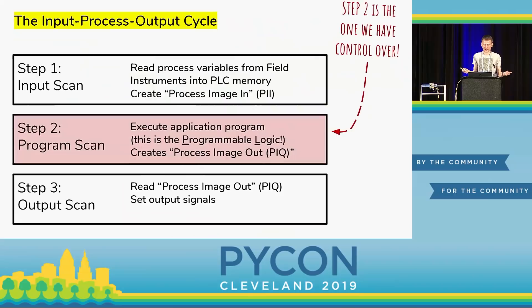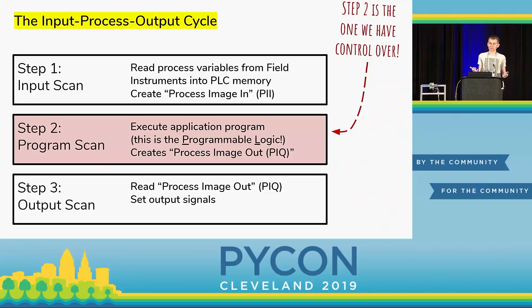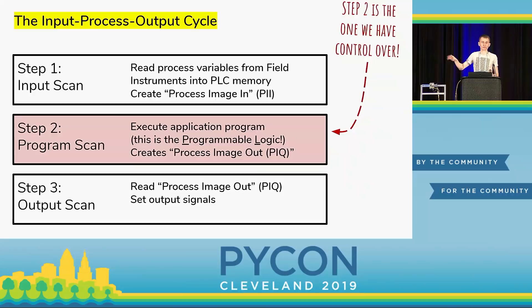A PLC goes through the IPO cycle like any compute device. In the first step, input, we read the process variables from the field — the PLC looks at electrical signals and stores them in memory in a place called the process image in. In step two, we run some logic and computation, turning input variables into output variables, written to the process image out. The PLC then turns those variables into electrical signals to our actuators — a motor, a fan, whatever we're controlling. The interesting bit is step two, because that's where the programmable logic lives and where we can have an effect.